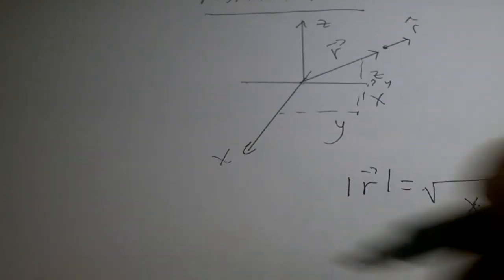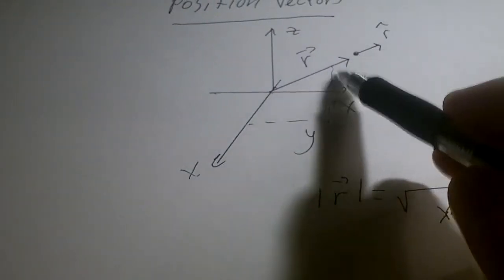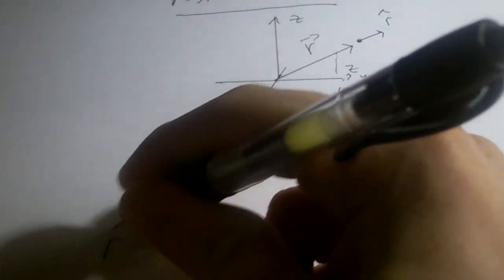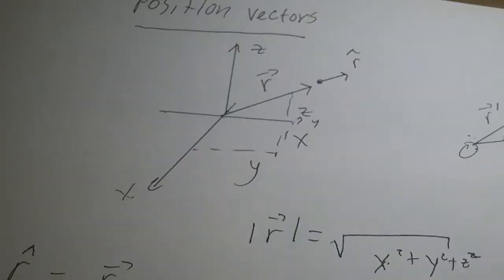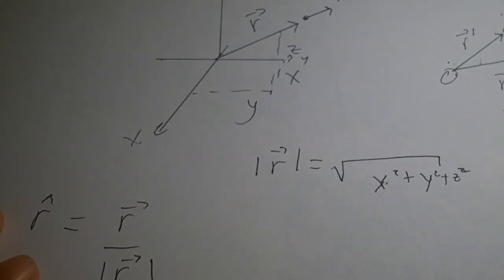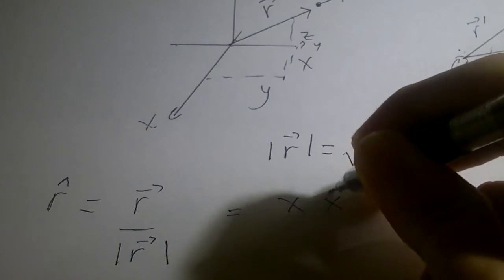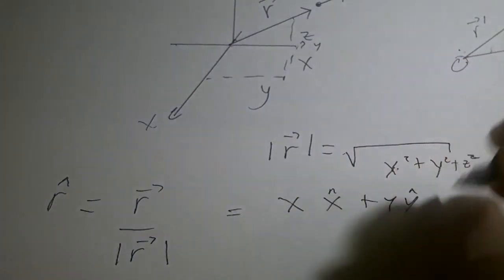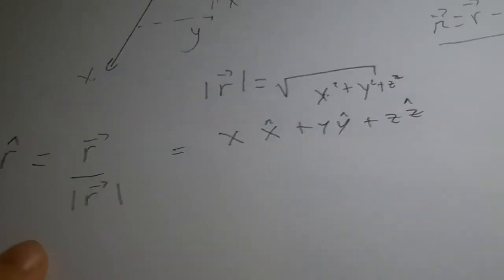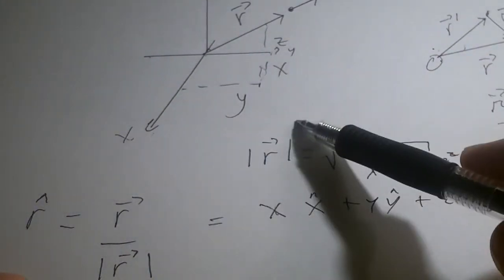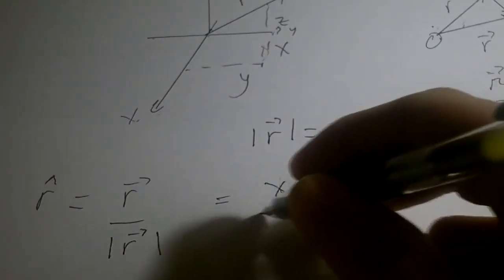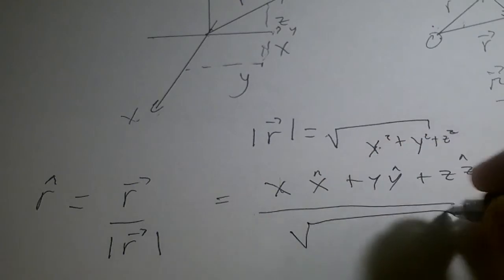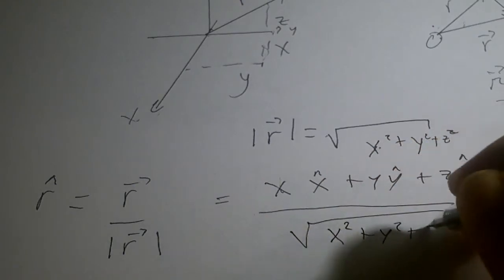So what's r-hat? Recall r-hat is a unit vector, so it's the vector r over the length of r. And r is x times x-hat plus y times y-hat plus z times z-hat — that's the position vector: this much in the x direction, this much in the y direction, this much in the z direction — over the length of r, which is the square root of x squared plus y squared plus z squared.